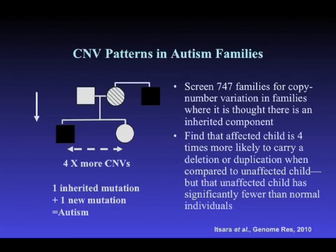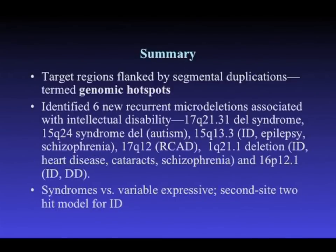This is consistent — though not proven — with a one-plus-one, two-mutations model leading to autism. In summary: we targeted regions flanked by segmental duplications, termed them genomic hotspots, and identified six new recurrent microdeletions. Some were syndromic like the 17q21 deletion. Some were variable in outcome. I'm pretty confident the ones I've listed are pathogenic — the odds ratios are very high. We have this distinction between syndromic CNVs versus variable expressive ones, and an observation of too many double hits for the 16p12.1 deletion in individuals with intellectual disability.